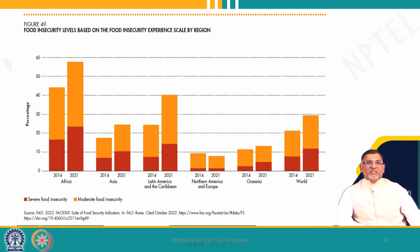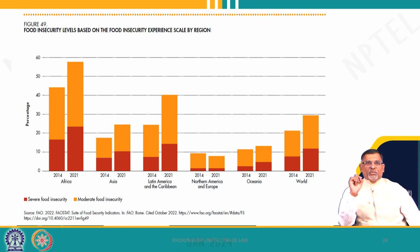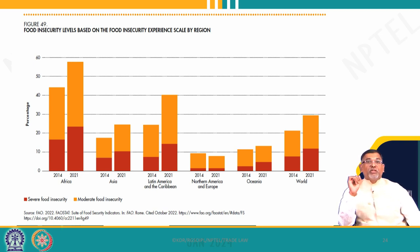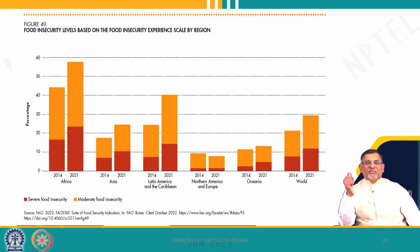Food insecurity levels are one of the important factors in agricultural negotiations in WTO. Severe food insecurity can be found in Africa and Asia, Latin America, and Oceania, then slight severe food insecurity in Northern America and even Europe. Europe is not devoid of food insecurity. Moderate insecurity is also highest in Africa, followed by Latin America, Asia. Comparing the 2014 situation to 2021, there is only slight improvement — food insecurity has actually increased. The FAO says that food insecurity is very severe in some continents like Africa and Asia.